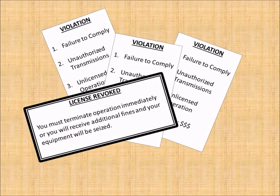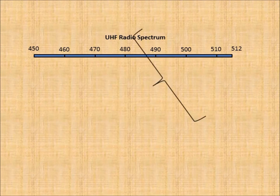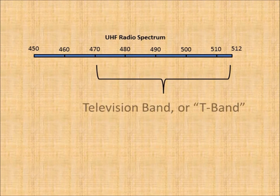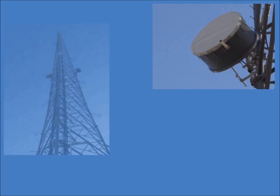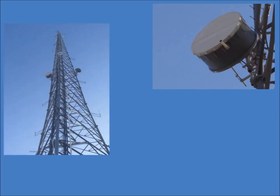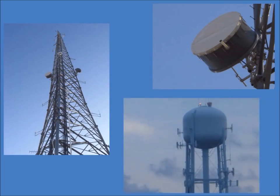Certain users in the 470 to 512 MHz band — also known as the T band, formerly occupied by television channels — were not required to narrow band, pending the development of a nationwide broadband system. It is a common misconception that digital operation is required for narrow banding; properly licensed users are able to operate narrow band analog systems.